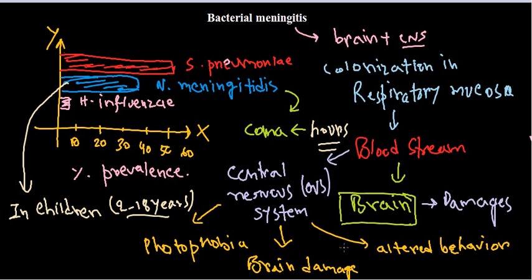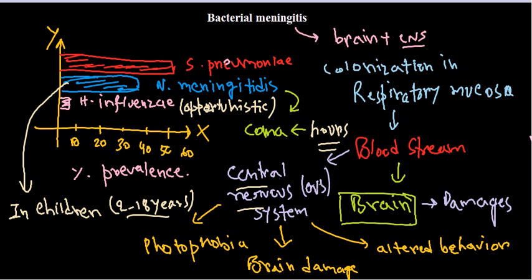The third causative agent is Haemophilus influenzae, which is a normal resident of the human upper respiratory tract — an opportunistic pathogen. It spreads from the upper respiratory tract to the nasal mucosa, then becomes systemic, evading the bloodstream and reaching the CNS, where it causes brain damage and disease. Haemophilus influenzae predominantly causes meningitis in newborns and infants.